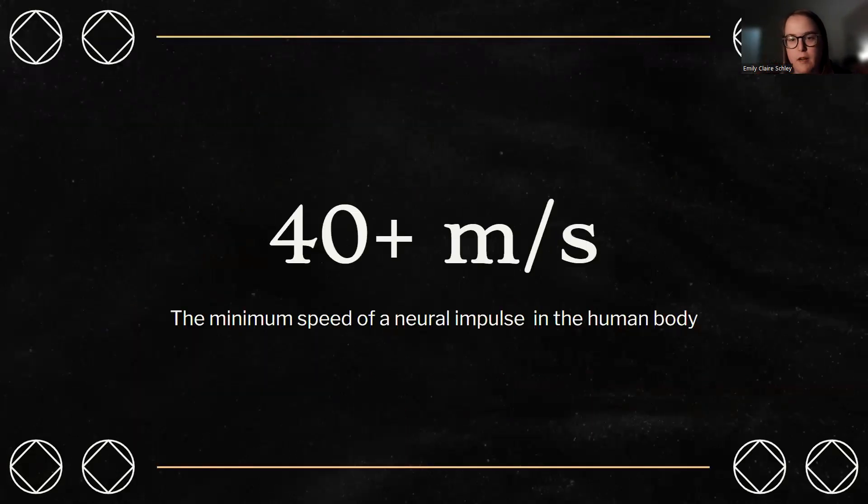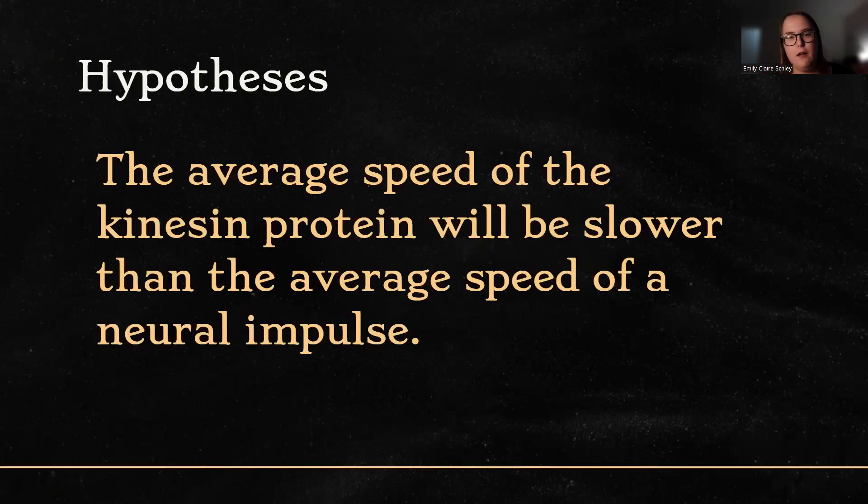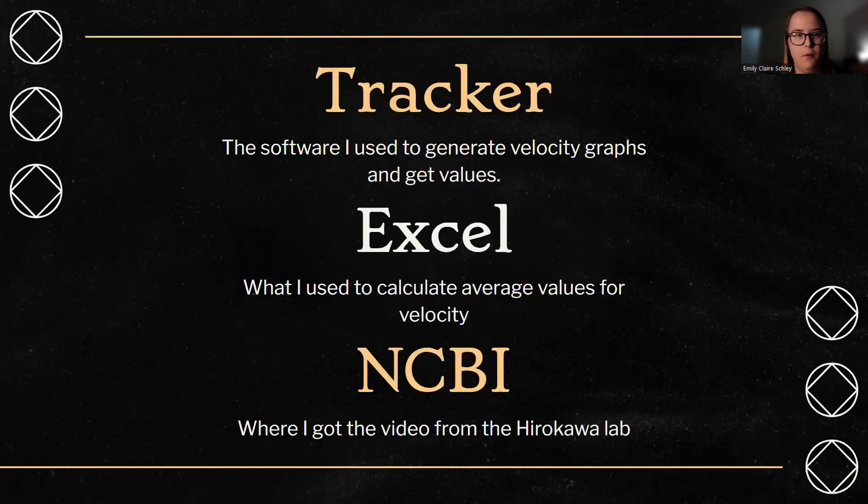So the average speed of a neural impulse in the human body is 40 or more meters per second. This again was tracked in that frog, but again it's very similar to humans, so it's generally taken as the speed of a neural impulse in the human body. So my hypothesis is that the average speed of a kinesin protein will be slower than the average speed of a neural impulse because kinesin is needed less frequently than neural impulses.